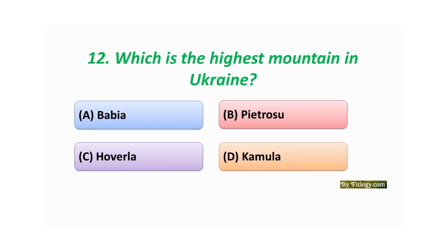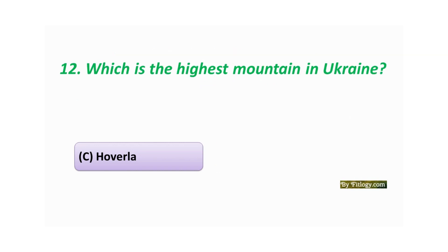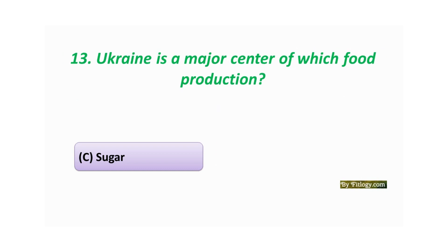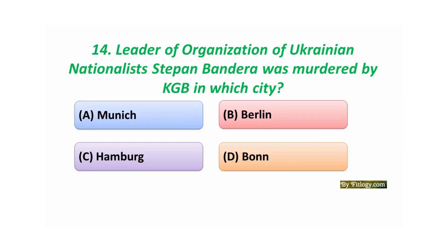Question number twelve: Which is the highest mountain in Ukraine? Option A: Vabia. Option B: Pietrosu. Option C: Hoverla. Option D: Kamula. The correct answer is Option C: Hoverla. Question number thirteen: Ukraine is a major center of which food production? Option A: Wheat. Option B: Rice. Option C: Sugar. Option D: Salt. The correct answer is Option C: Sugar.